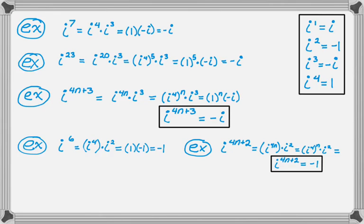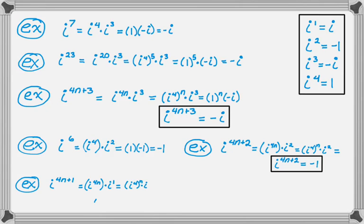Remembering those four values in the box is going to be crucial. Say I have i to the 4n plus 1, which is really the only remaining case. That's i to the fourth times i to the first. I'm just going to get i here — i to the fourth to the n times i — so i to the 4n plus 1 always reduces down to just i.